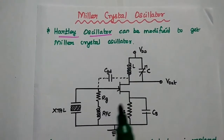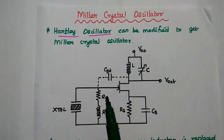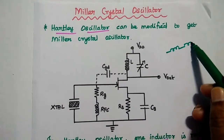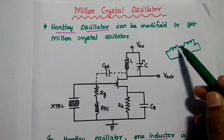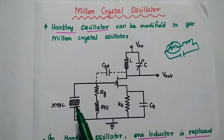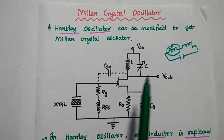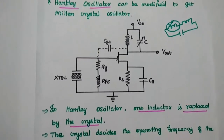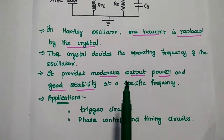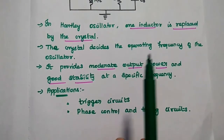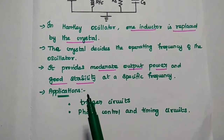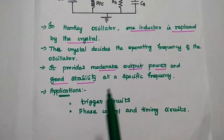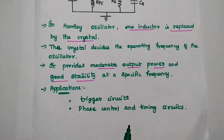In the Miller crystal oscillator, the Hartley oscillator configuration is used. In the Hartley oscillator there are two inductors and one capacitor — one of the inductors is replaced with the crystal material. The capacitance and inductance can be internal values of the transistor. The crystal decides the operating frequency of the oscillator. The Miller crystal oscillator provides moderate output power and good stability at a specific frequency range, and is widely used in clock circuits, phase control, and timing circuits.